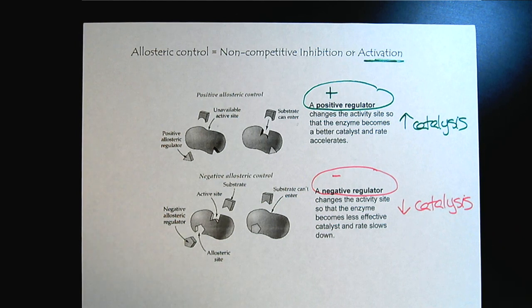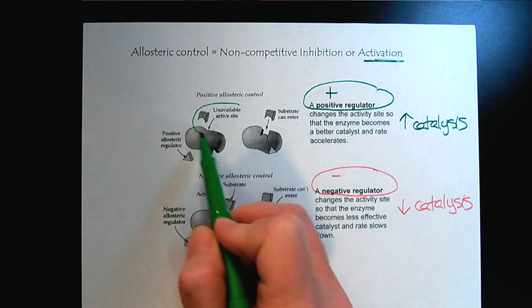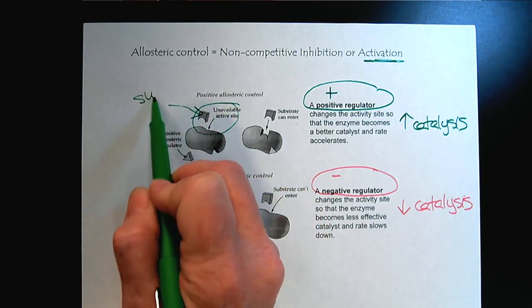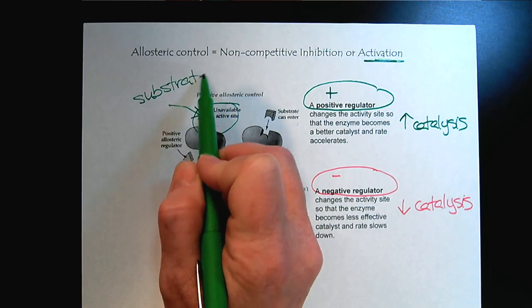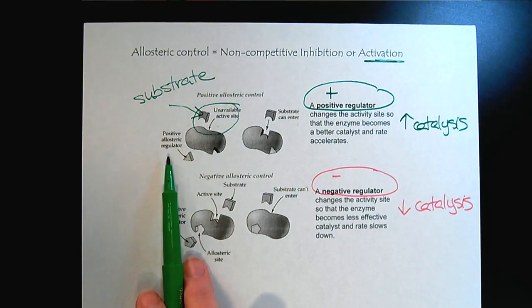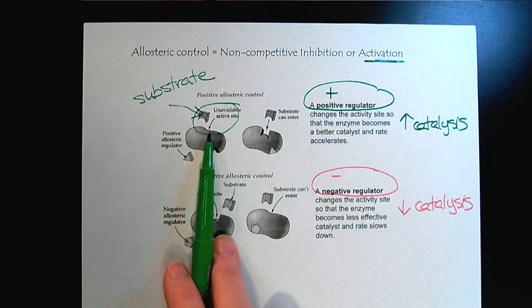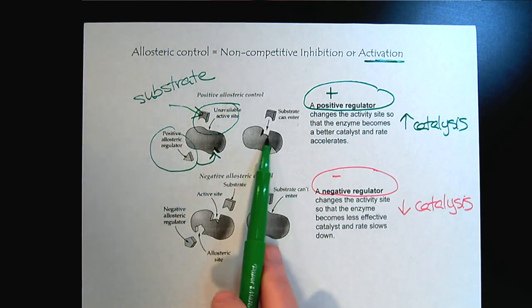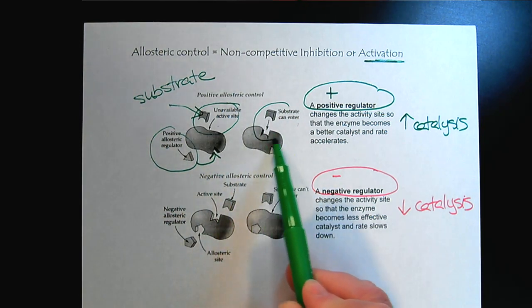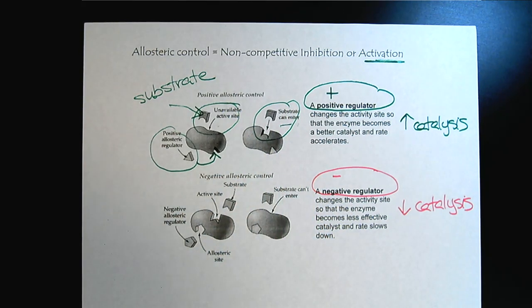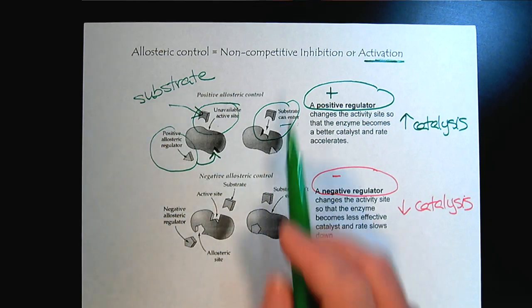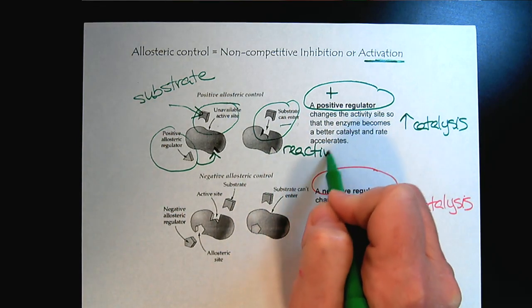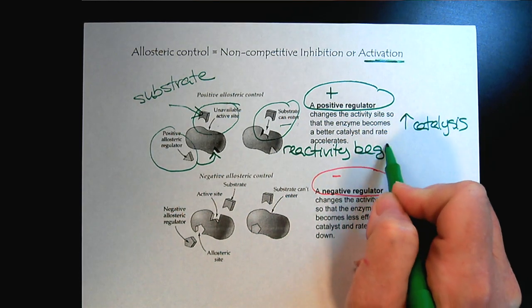So we can see that it's basically the non-competitive inhibition. So, here is our active site for our substrate. And we see that without the allosteric regulator, the active site is unavailable. As soon as the allosteric regulator comes in, then we see that we've opened the active site, and now the substrate can enter. So now the reaction begins. So reactivity begins.